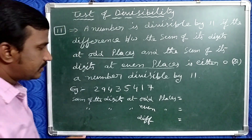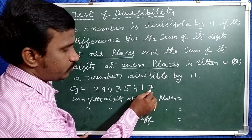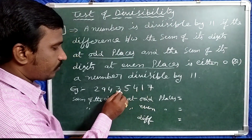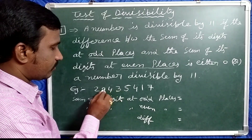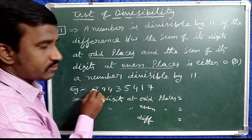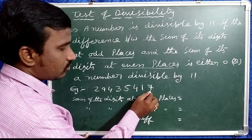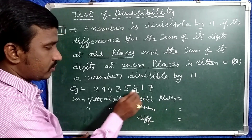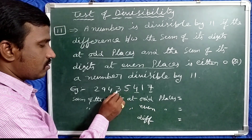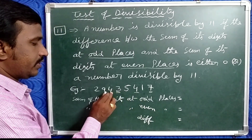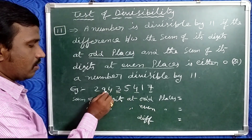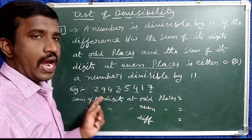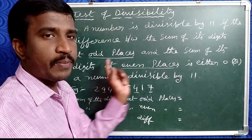Suppose, take a number here. The places are: first, second, third, fourth, fifth, sixth, seventh, eighth places. So the positions alternate: odd, even, odd, even, odd, even, odd. First of all, add the odd place digits.